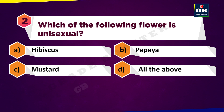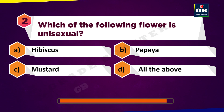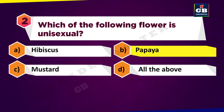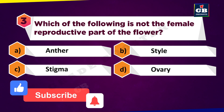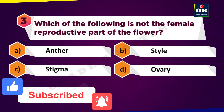Which of the following flowers is unisexual? A: Hibiscus. B: Papaya. C: Mustard. D: All the above. Which of the following is not the female reproductive part of the flower? A: Anther. B: Style. C: Stigma. D: Ovary.